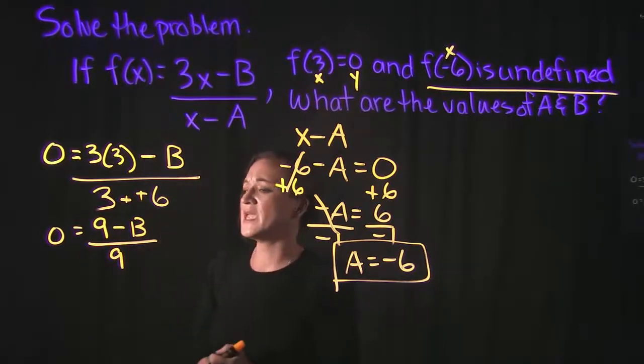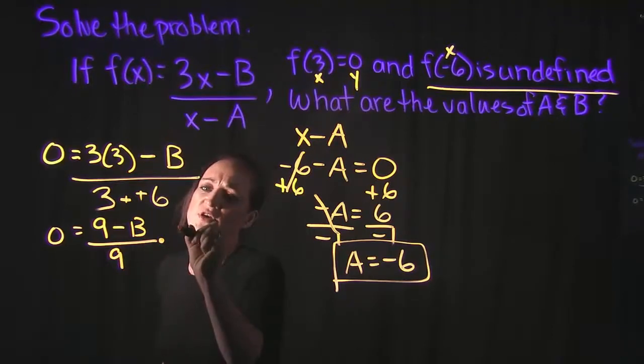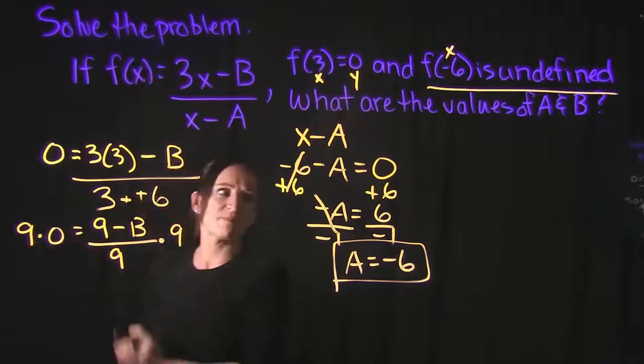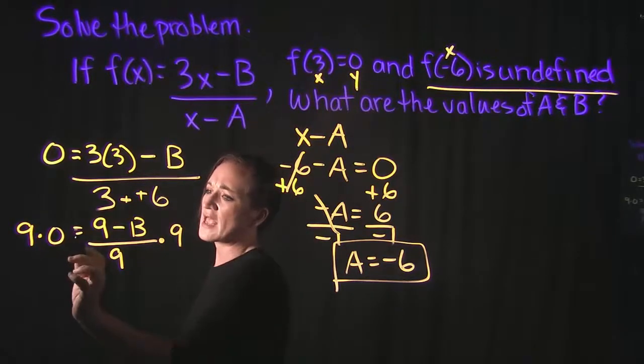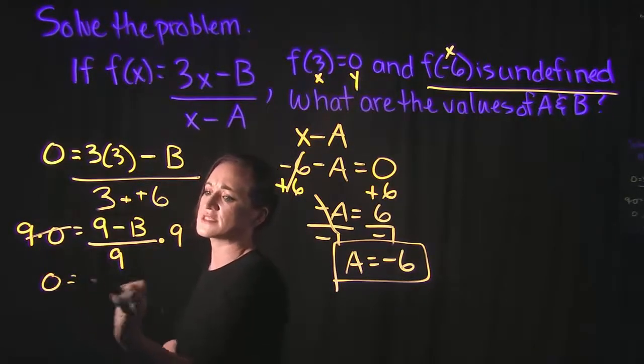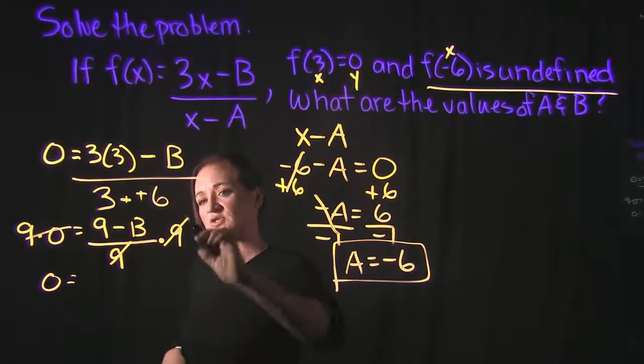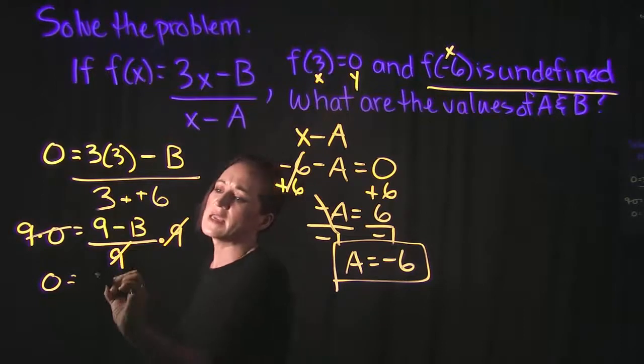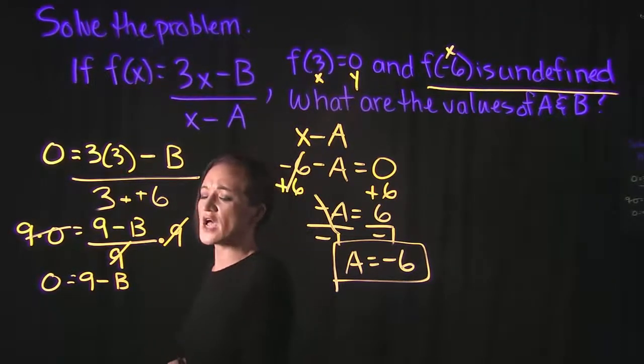Solving this for b, we need to get rid of the denominator. So in order to get rid of the denominator, we multiply both sides of the equation by it. So we're going to multiply both sides by 9. On the left, 9 times 0 is equal to 0. On the right-hand side, the 9 in the denominator cancels with the 9 we just multiply by, giving us 9 minus b.